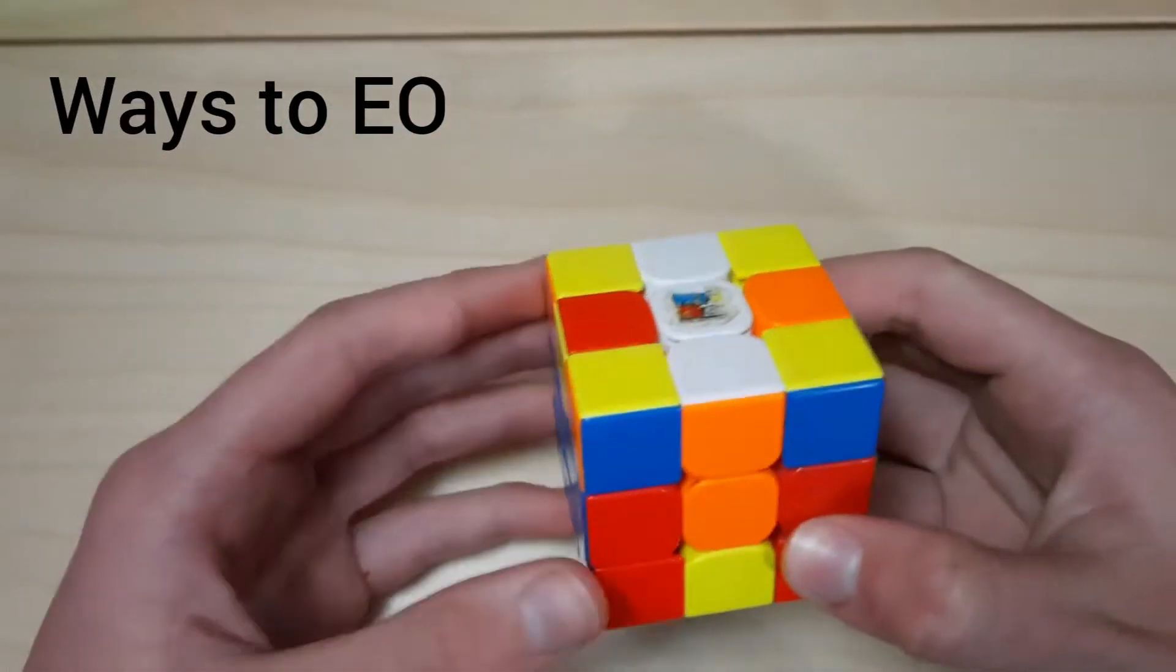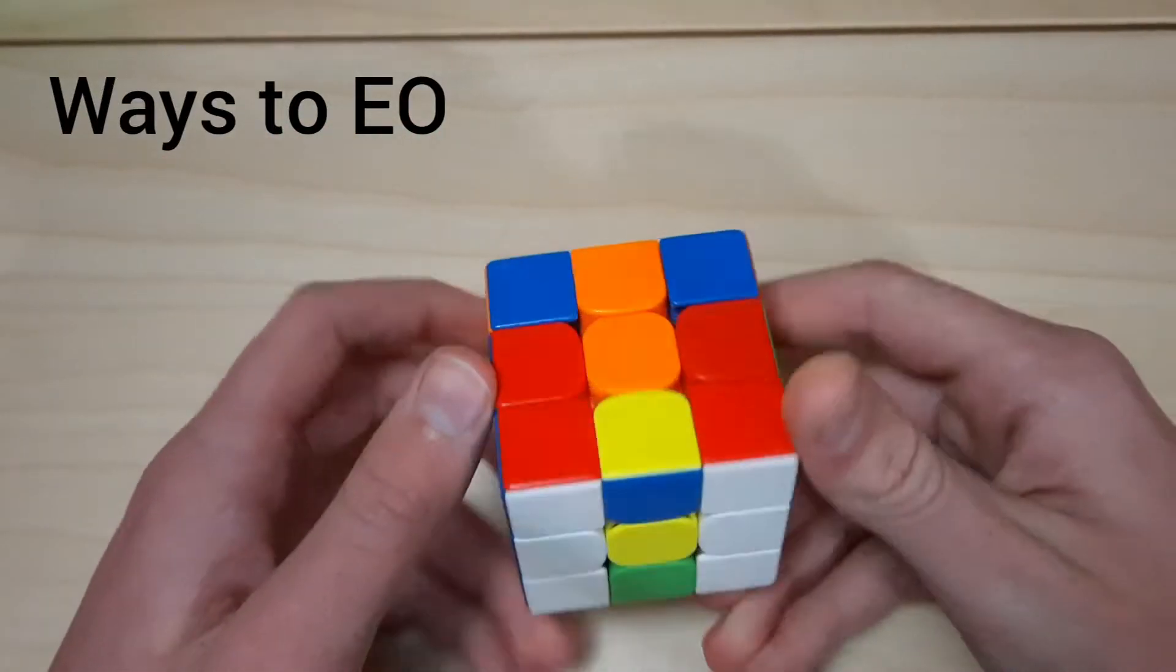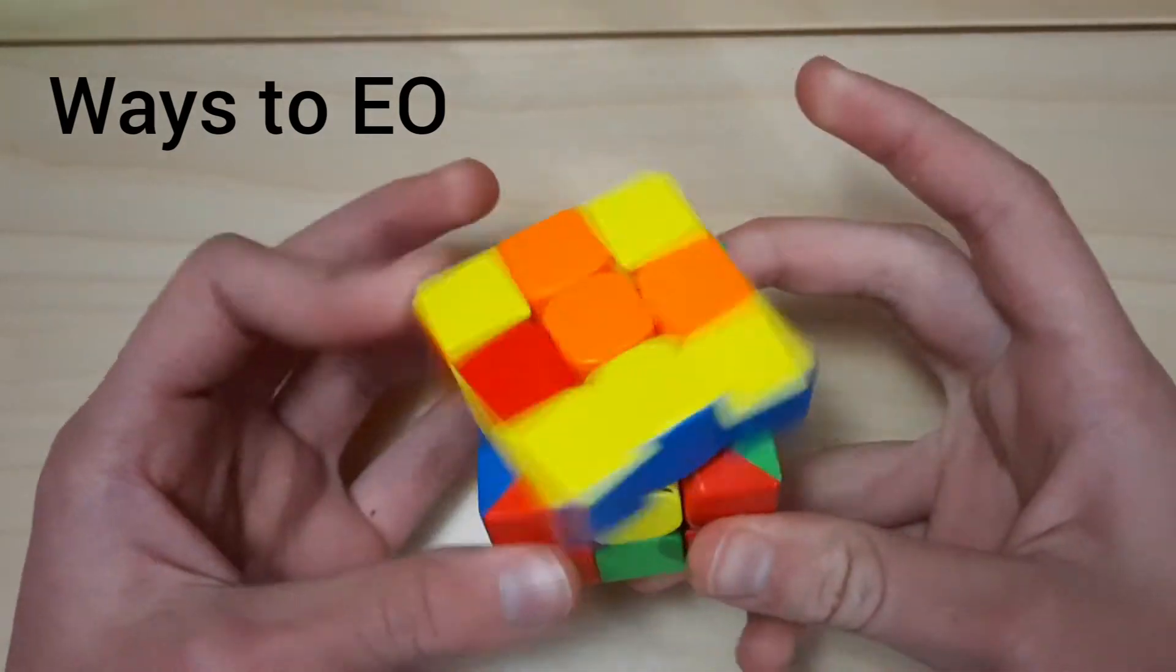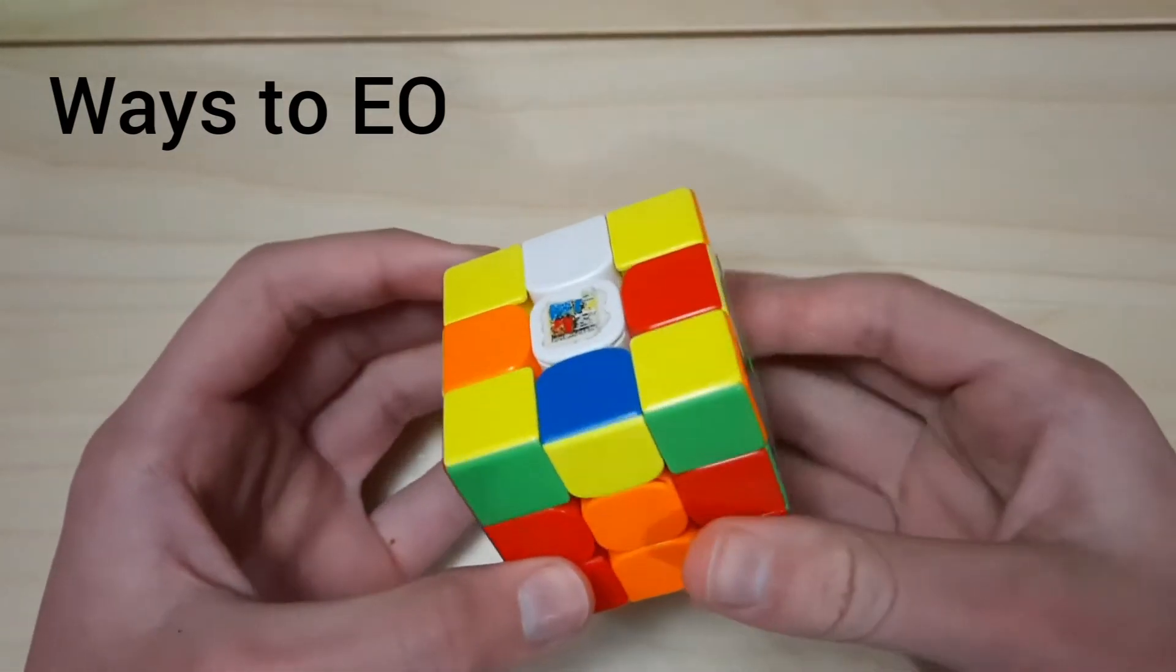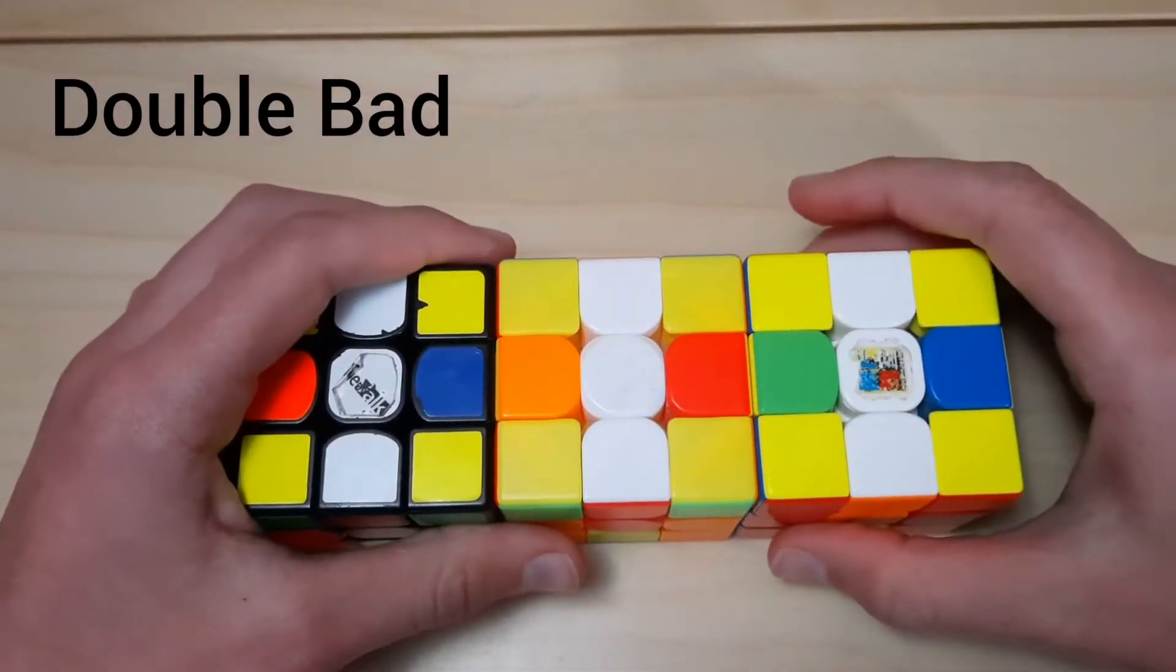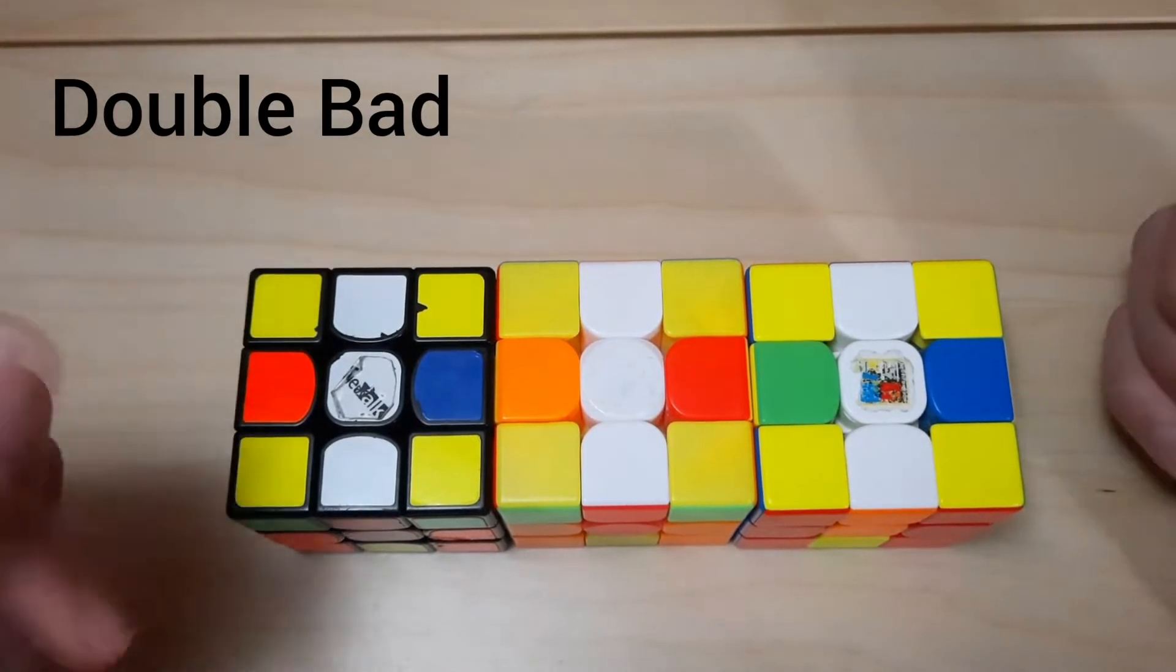This case is very similar to the 4-0 case that we just covered last episode, in that there's only one way to set up TEO and it's doing M'U2M to get a good arrow, or doing M'U2M'. With this first set of cases, we have both our left and right edges misoriented.